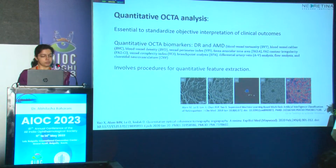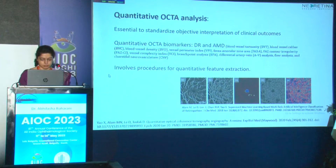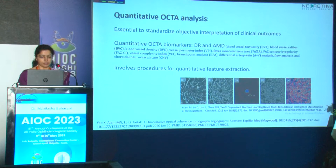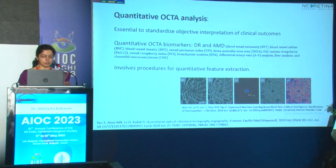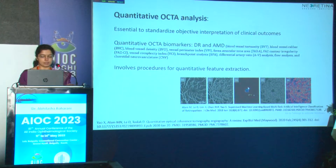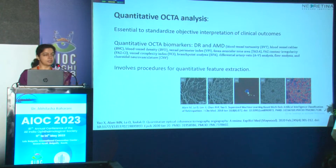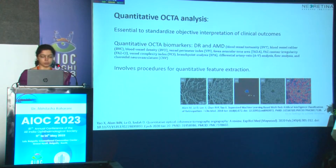It involves procedures for quantitative feature extraction. You take a standard scan, and you can convert it — you can binarize the image and see the blood vessels and non-perfusion areas clearly. Then you can skeletonize the blood vessels and isolate the foveal avascular zone. All this has been used in diabetic retinopathy.